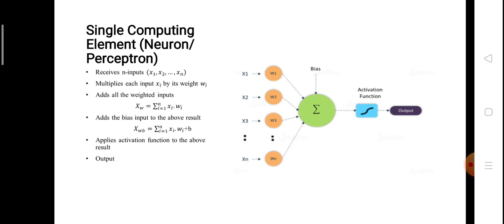In this diagram you can see we have a set of inputs x1, x2, x3 up to xn, and these inputs are received along with their associated weights: w1 with x1, w2 with x2, and similarly wn with xn. The question arises — what do these weights signify? Generally, these weights specify how important a given input is relative to the other inputs. Let me consider an example.